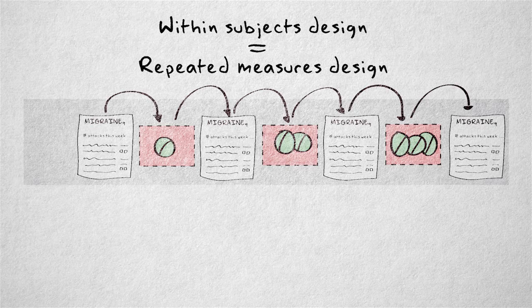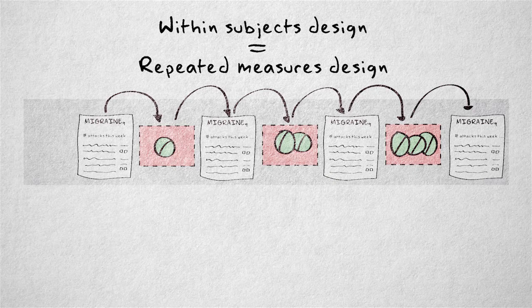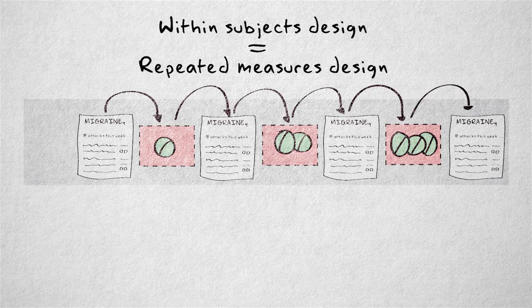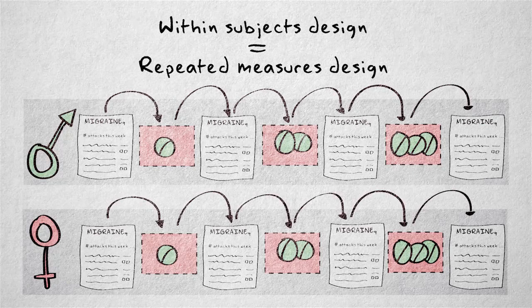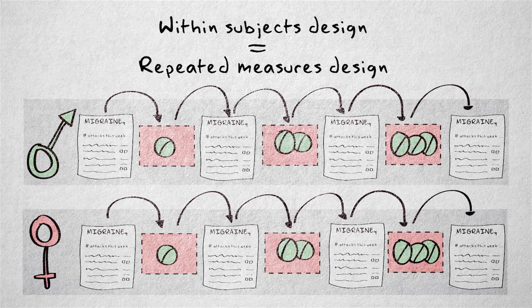The term repeated measures design is used as a synonym for a within-subjects design. But it's also used to refer to more complex designs, with at least one within-factor and possibly one or more between-factors.